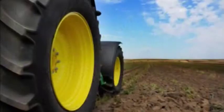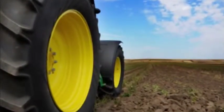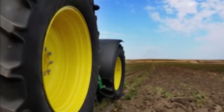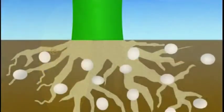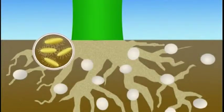Soils that are closer to pH neutral are best for growing crops. In Iowa, soils naturally trend towards acidity. Applying ag lime reduces the acidity of the soil.